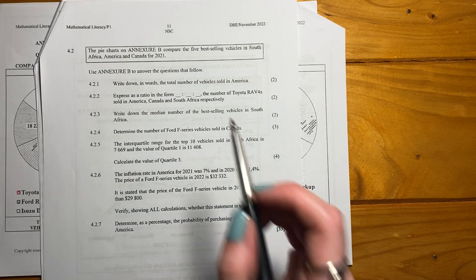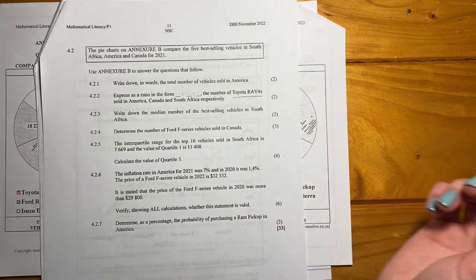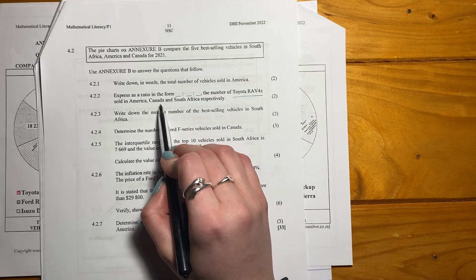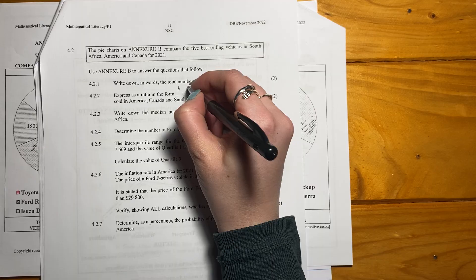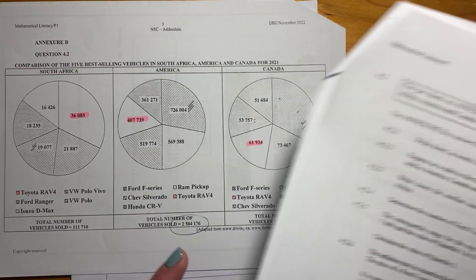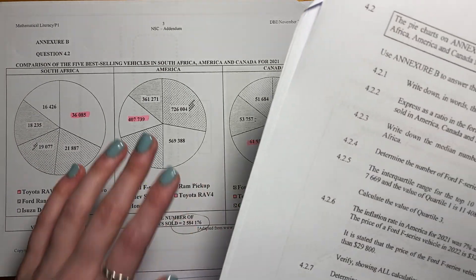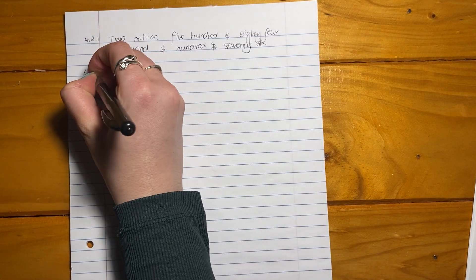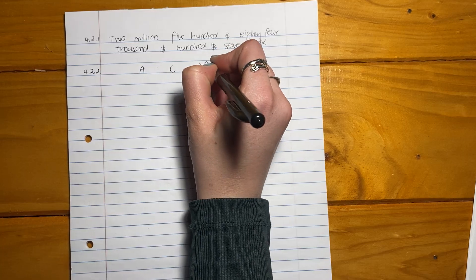Let's move on to the next question. Express as a ratio in the form this to this to this, the number of Toyota RAV4s sold in America, Canada, and South Africa, respectively. Now, importantly, it's going to go America, Canada, South Africa. If you look at the actual annexure, it goes South Africa, America, Canada. So don't mix them up. That's what students were doing. You have to do in the right order.